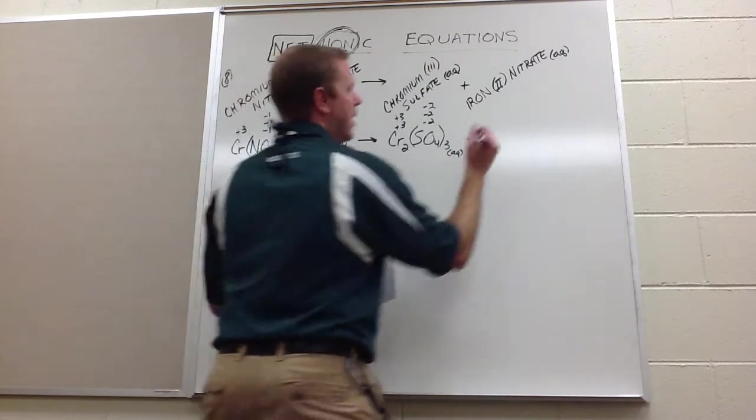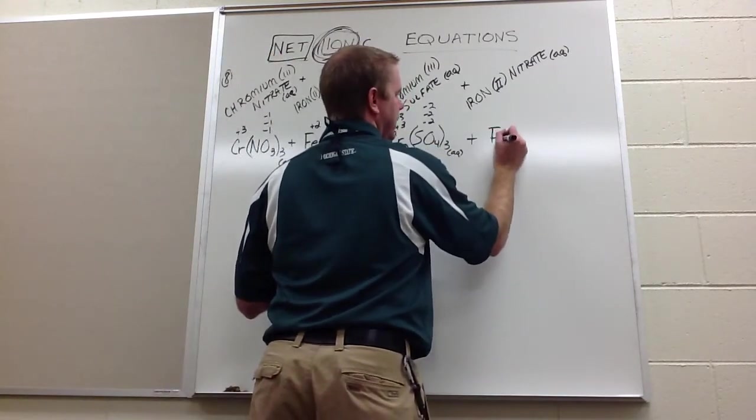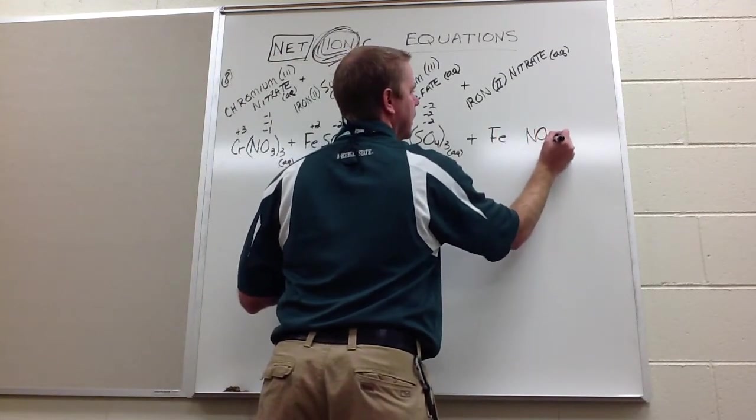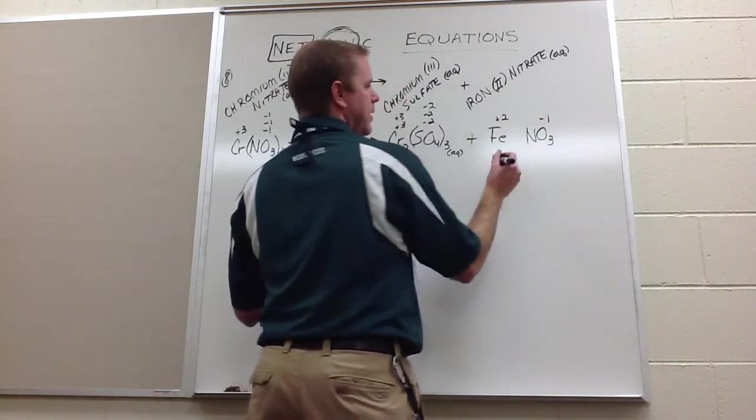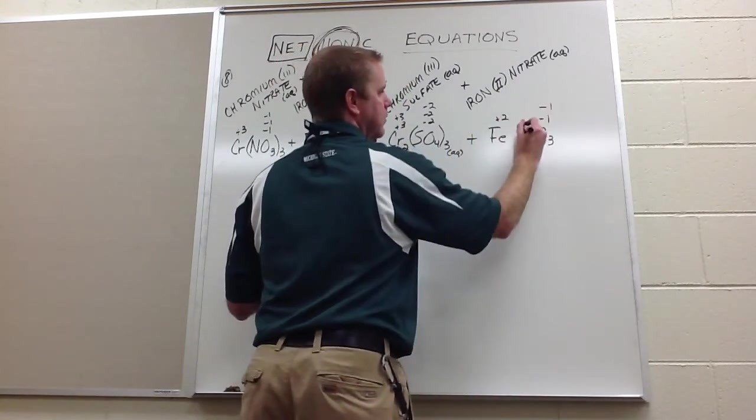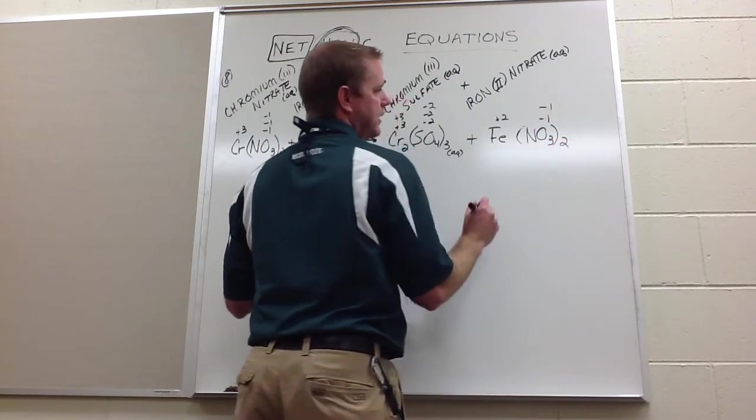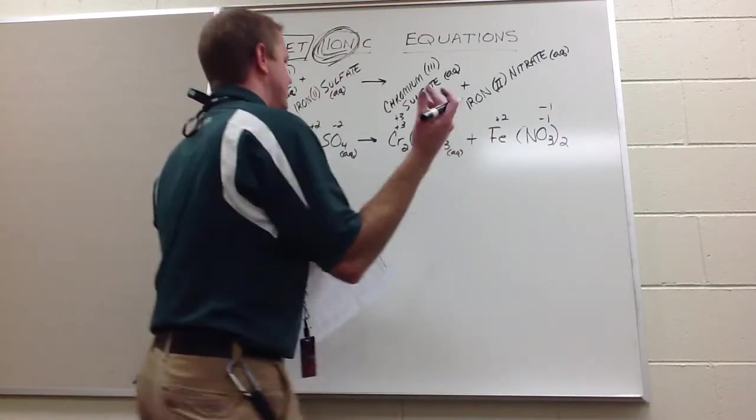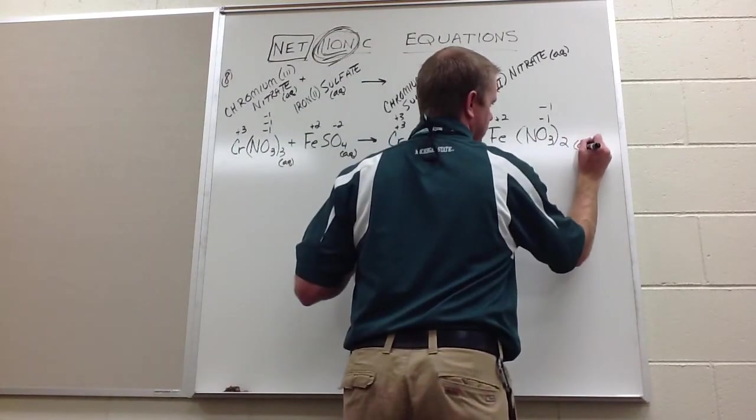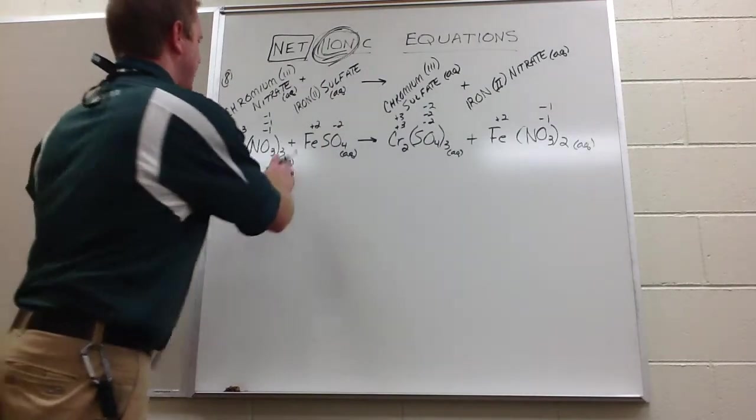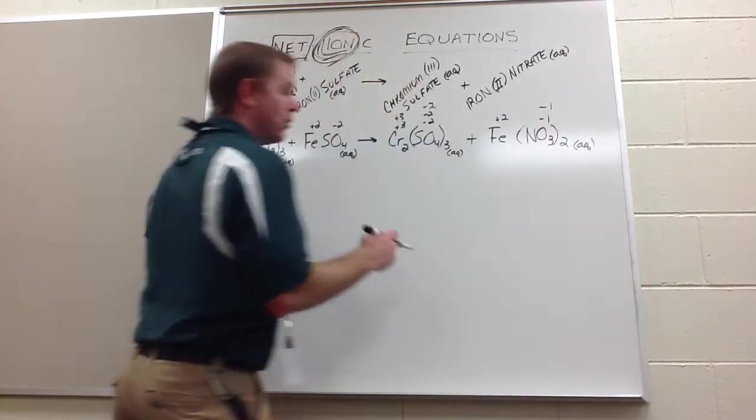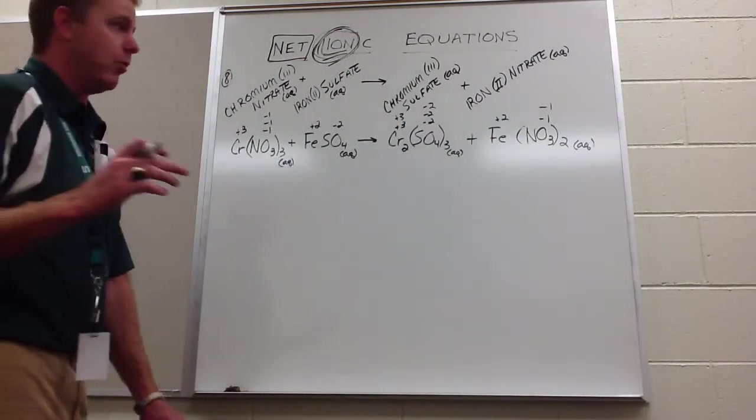And iron two nitrate is Fe and NO3. This is plus two iron, this is negative one nitrate. So we're going to need two nitrates. You can get rid of all your charges if you want to, but I'm not going to, just for time purposes. So what happens here is aqueous, aqueous, aqueous, and aqueous. All four things break apart.